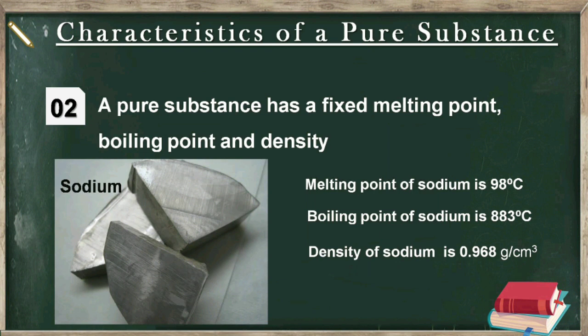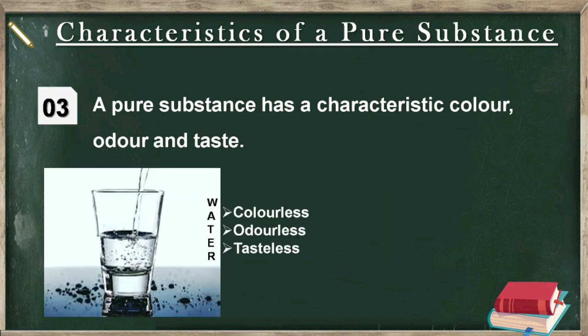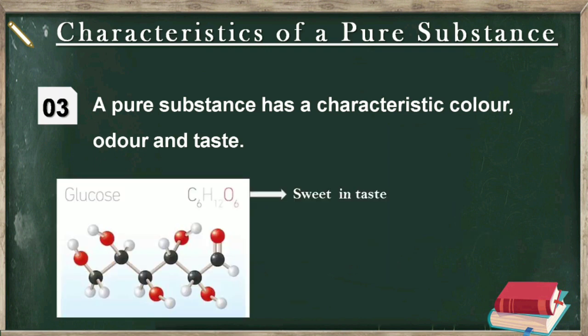Characteristic number 3 is that a pure substance has a characteristic color, odor and taste. For example, pure water is always a colorless, odorless and tasteless substance. The color of copper is always reddish brown and the taste of glucose is always sweet. This was all about pure substances. In the next video, we will study about mixtures and its types.